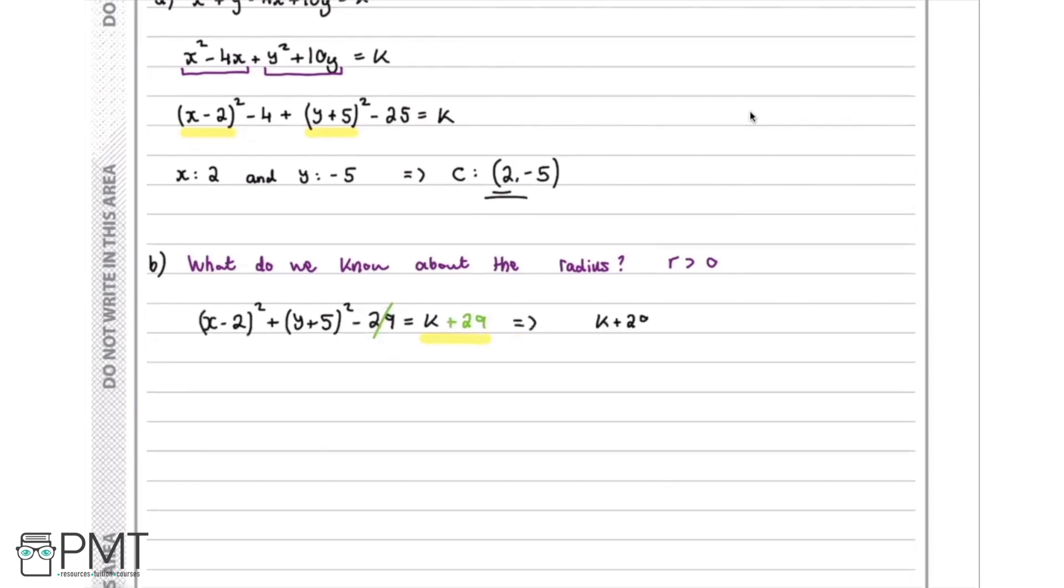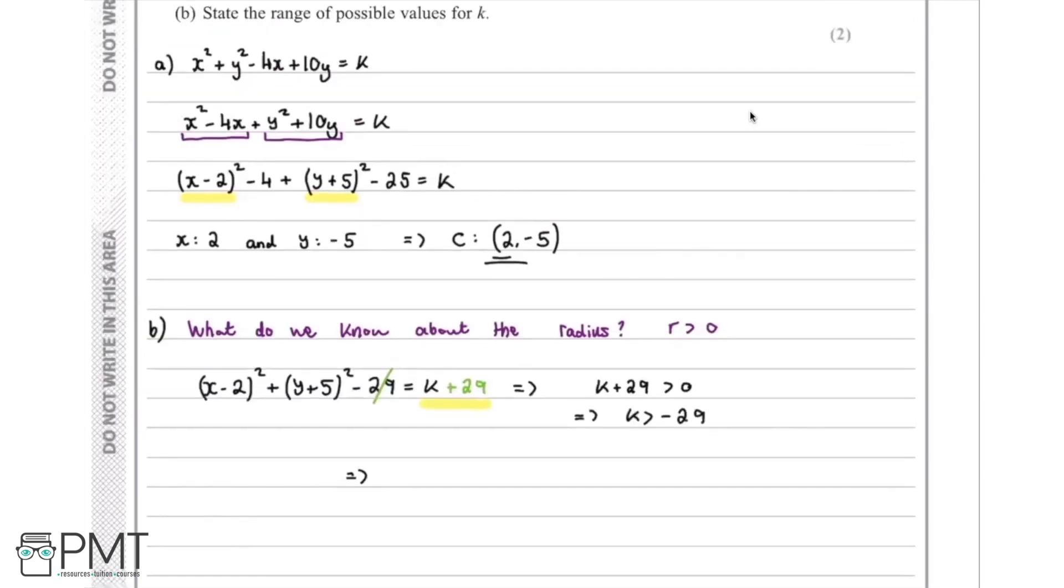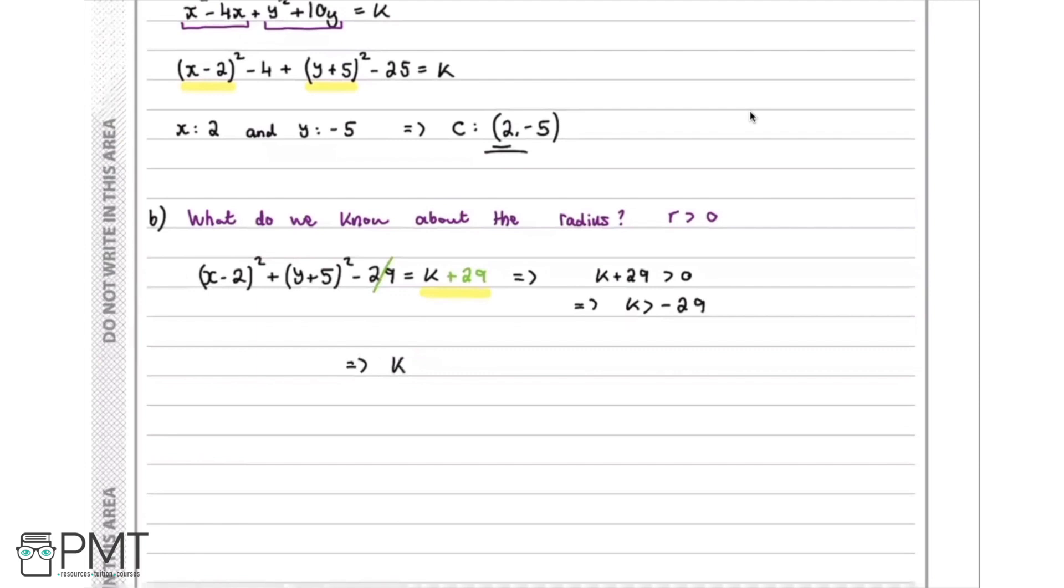So this now means that k plus 29 is going to be greater than zero, which means that rearranging this, k is greater than negative 29. So this means that we conclude that the range of possible values for k, looking back to the question, is going to be k is greater than negative 29.